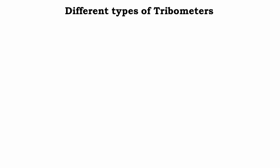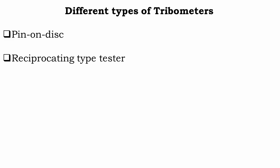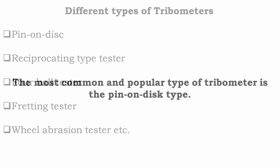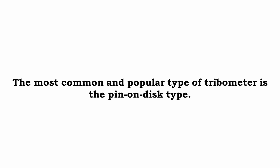There are different types of tribometer, such as pin on disc type, reciprocating type, four ball tester, fretting tester, wheel abrasion tester, etcetera. Among all of these tribo testers, the most common and popular type of tribometer is the pin on disc type.